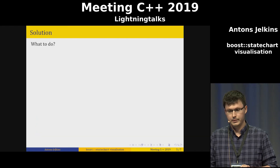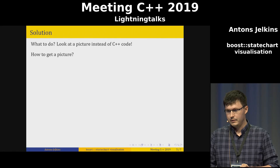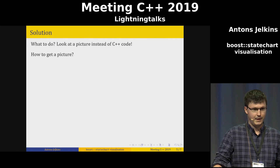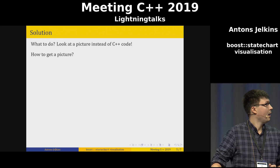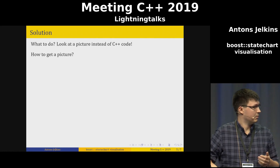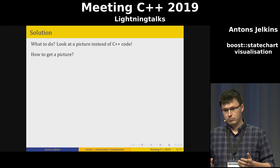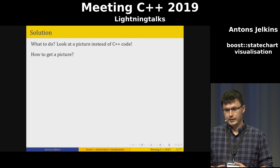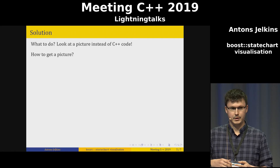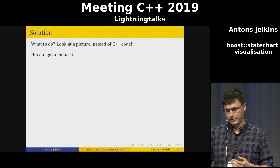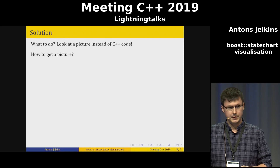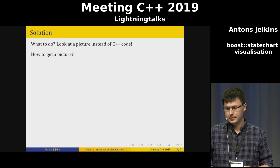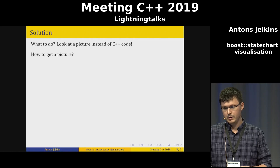What we can do instead is have a picture rather than look at C++ code. Initially we had to do it manually. Our project has about 10 to 20 state machines and they are modified quite frequently, so every time you get a review, you go through the code and draw the state machine by hand. This was time-consuming, so me and my colleagues built a small tool to help.